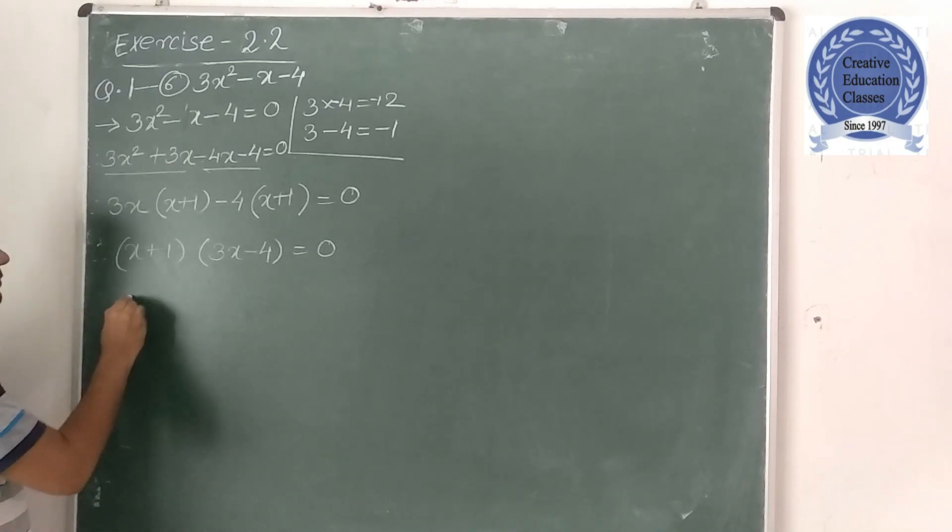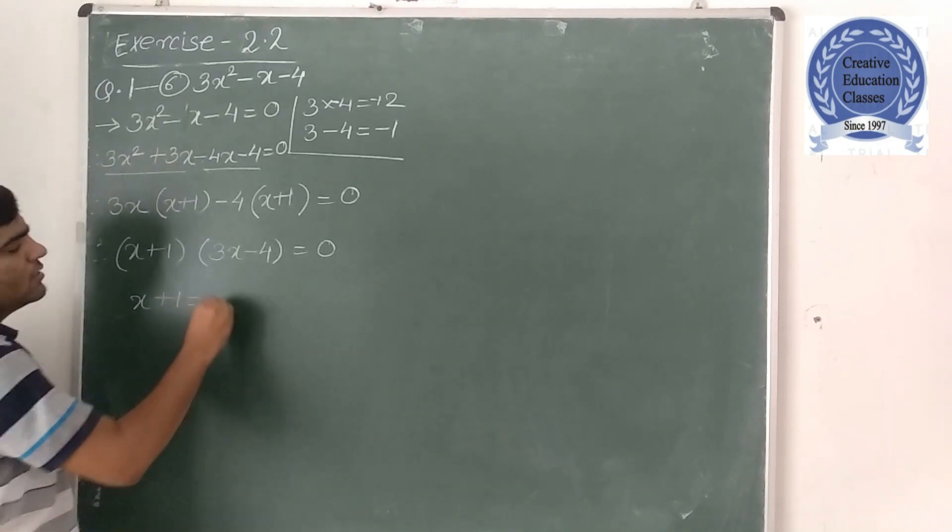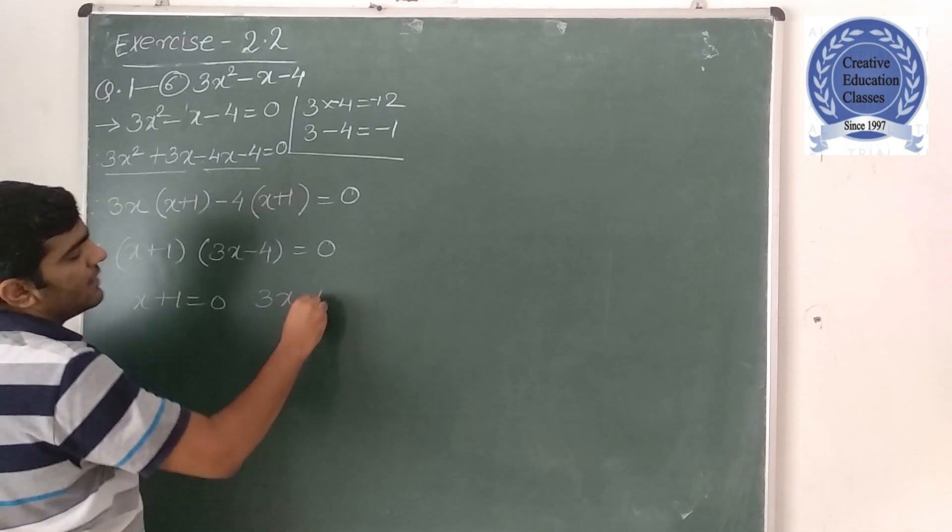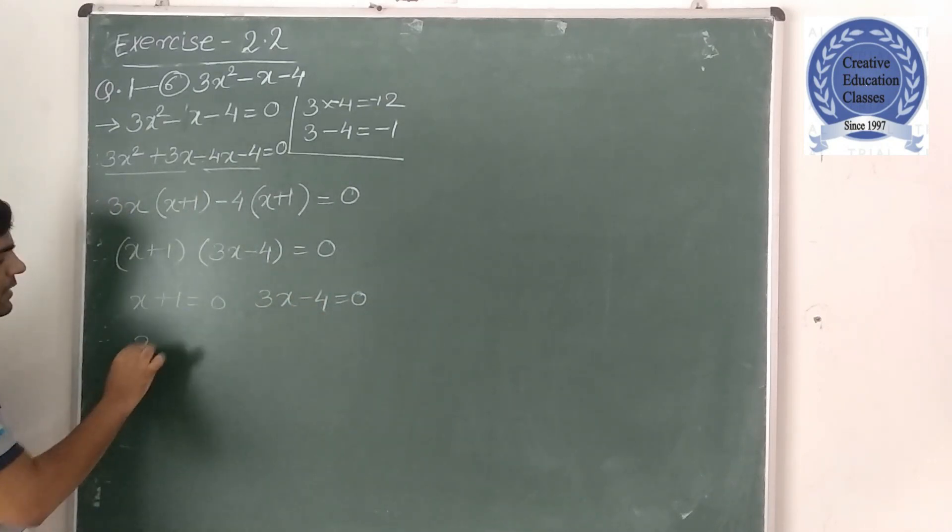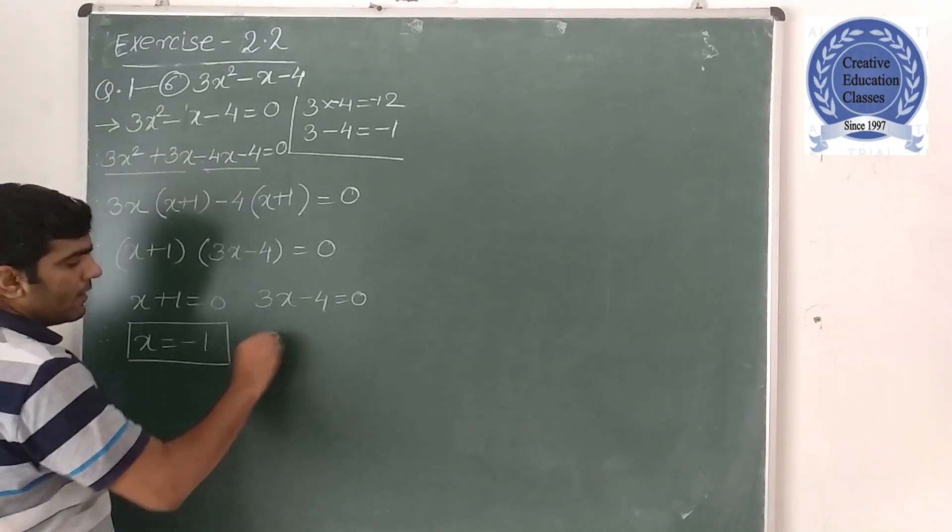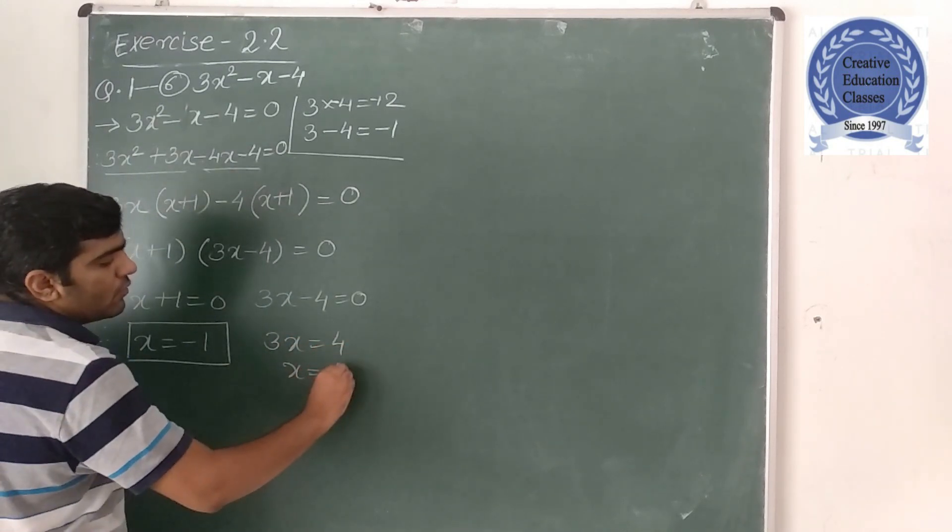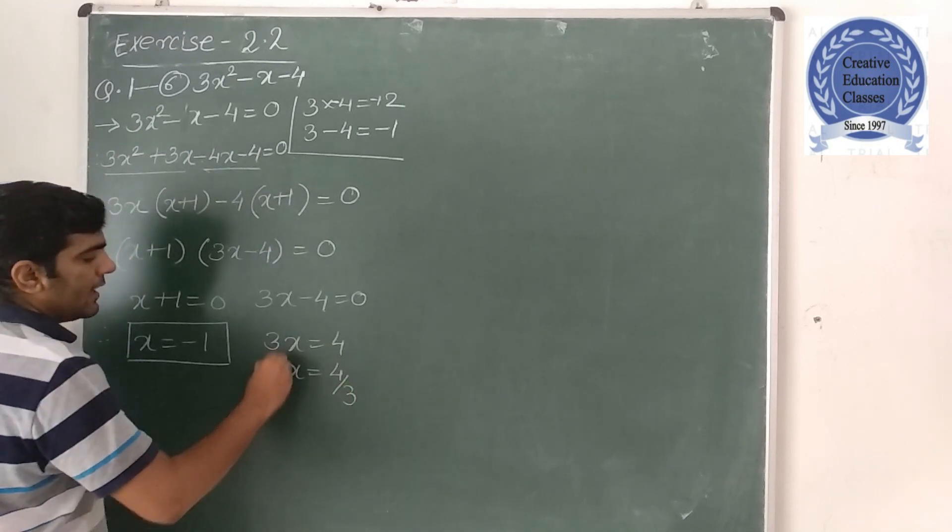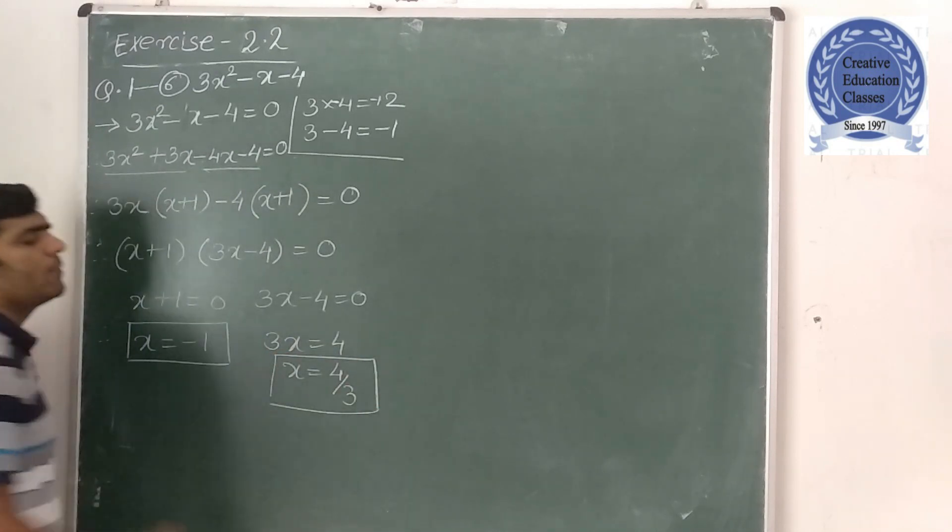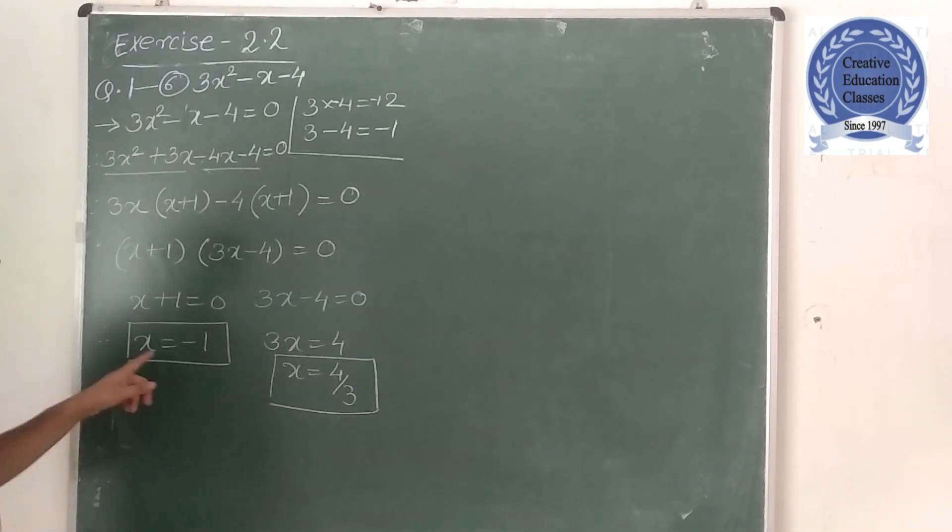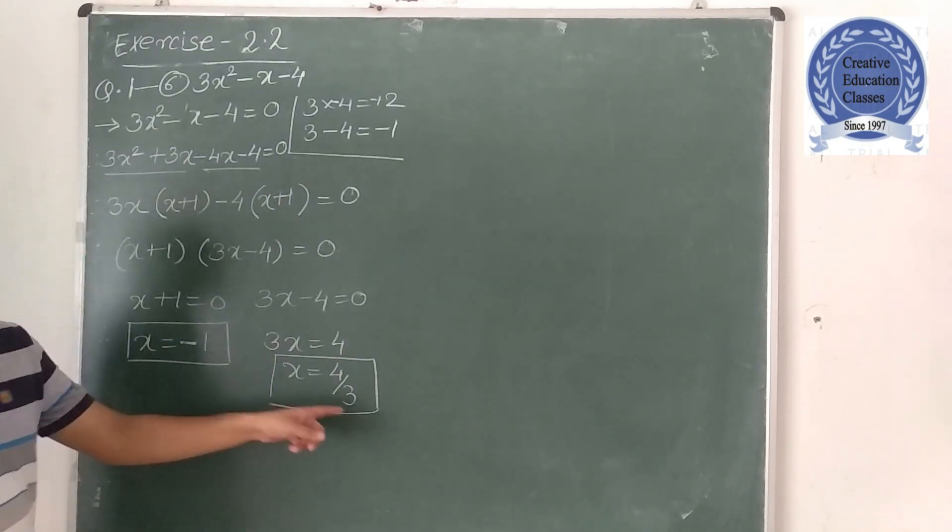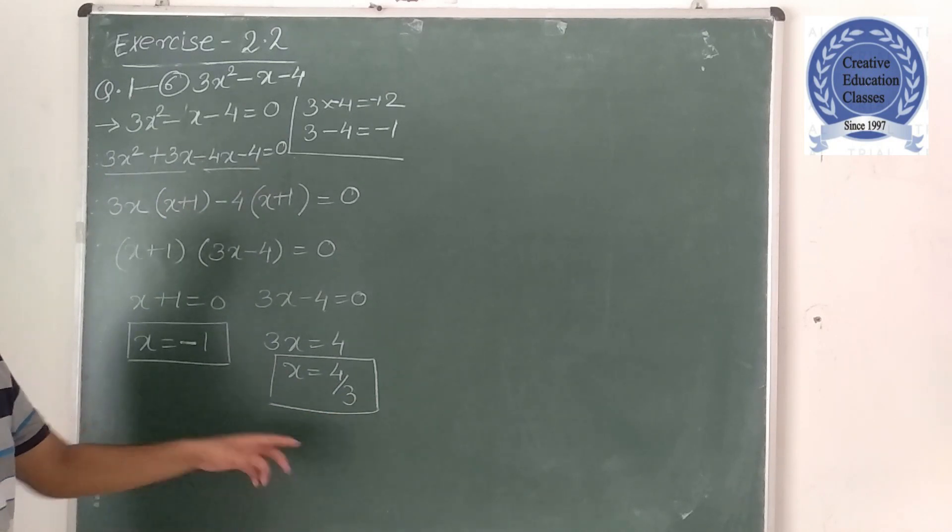So therefore, x plus 1 is equal to 0, 3x minus 4 is equal to 0. So what do I do? x is equal to minus 1, 3x is equal to 4, so x is equal to 4 upon 3. So I hope you can understand this. This is minus 1 and this is 4 upon 3.